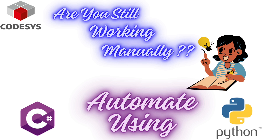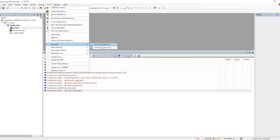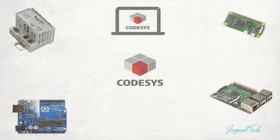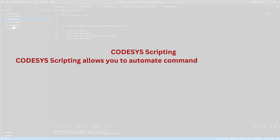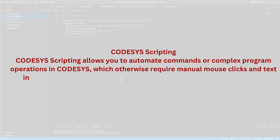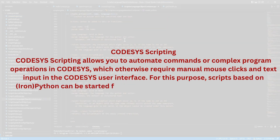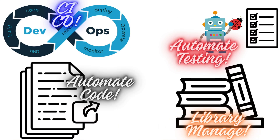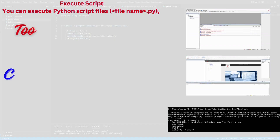Welcome back to the Codesys tutorial. Codesys is a platform to automate control systems and manufacturing processes by writing PLC code. But while automating these processes, we often forget to automate our own manual repetitive work during code development. In this tutorial, let's understand how we can automate all that manual work by utilizing Codesys scripting, which allows you to automate commands or complex operations using IronPython. It can be used for CI/CD, automating code, automated testing, or library management.